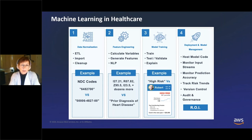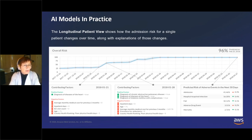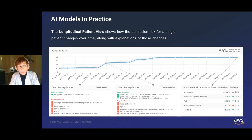Let's take a quick look at what actually comes out of these things. What you're looking at here is an example of a longitudinal view of admission risk for a single patient — how that risk changes over time, along with explanations. This is still Robert: he starts out around the 30th percentile, and the reason you can see in the factors listed below is a diagnosis and history of heart disease pushing his predictions up.